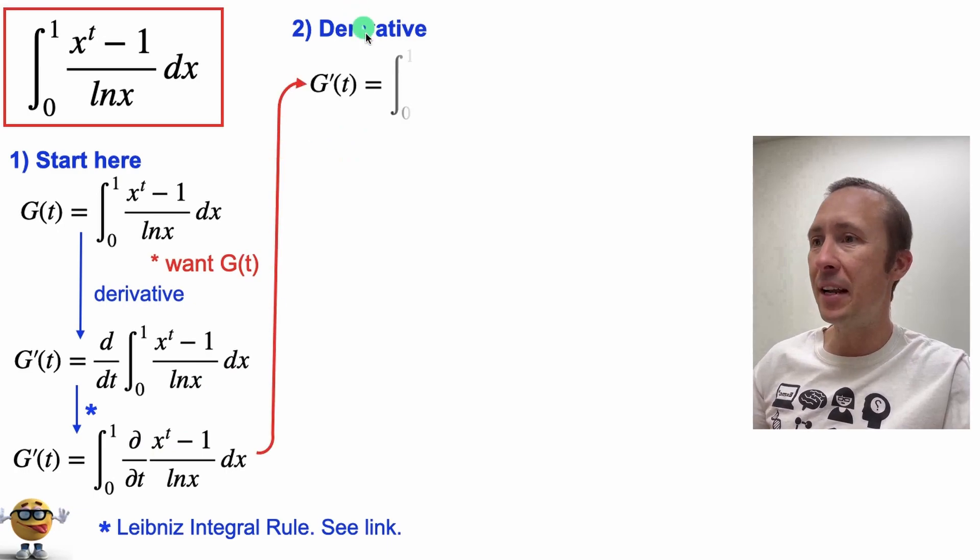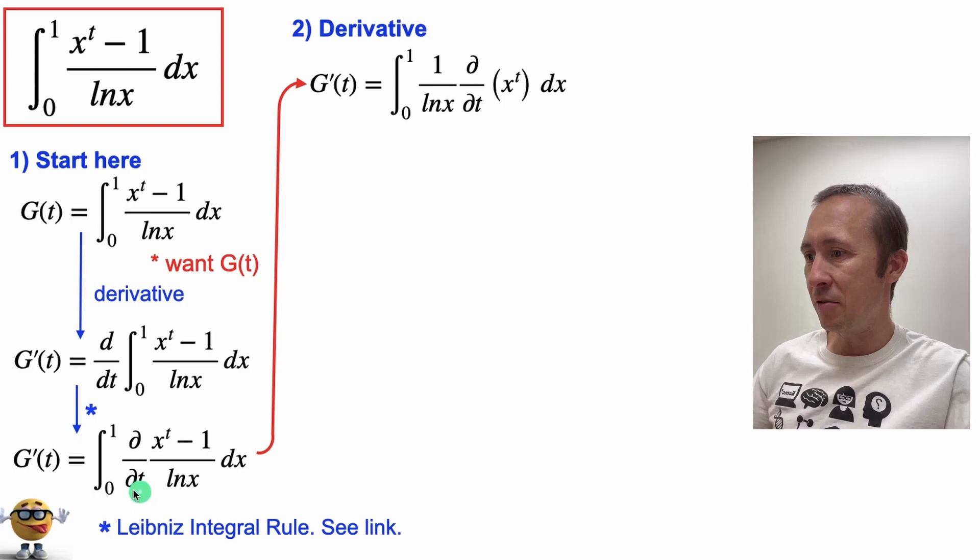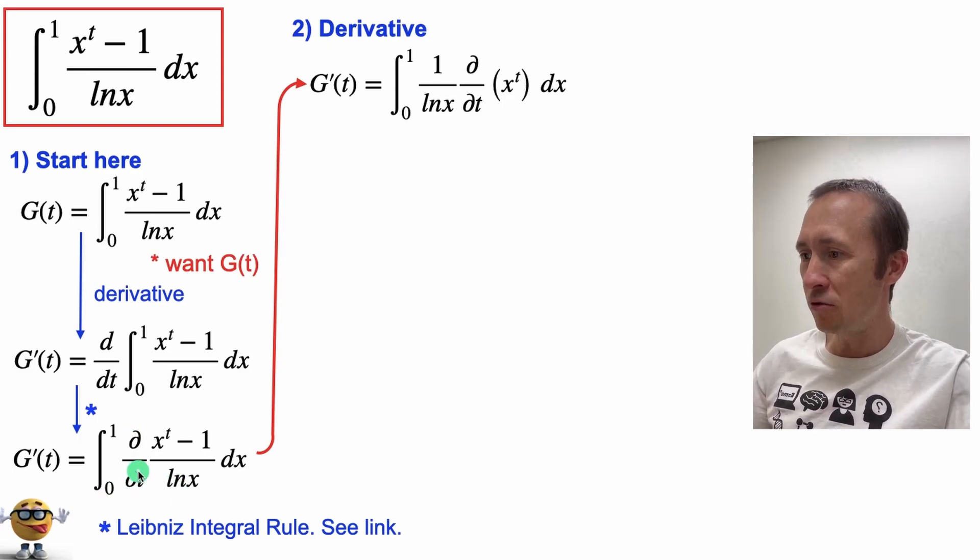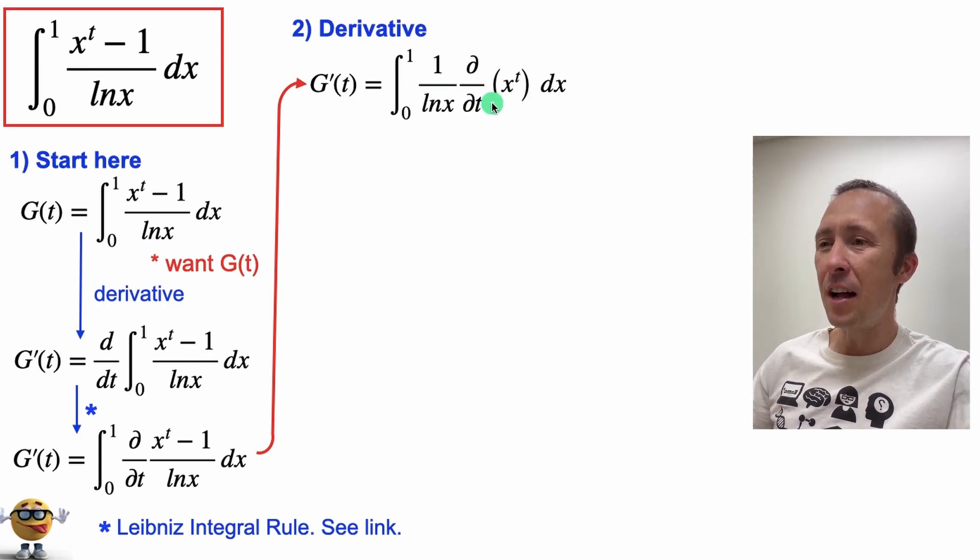Okay so we'll take the derivative and when it comes in we have 1 over ln x because we don't need to take the derivative of that because we're just taking the derivative with respect to t. This becomes the partial derivative once it's inside the integral and this my friends is not the power rule because we're taking the derivative with respect to the exponent not the base. So the derivative of this is ln x times x to the t.